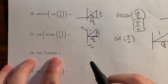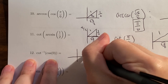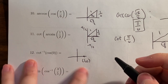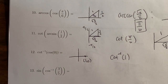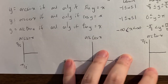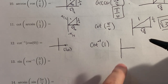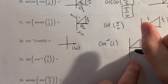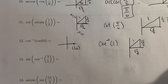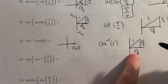For arccot⁻¹(cos(0)): find cosine of 0 first. At angle 0, the point is (1, 0), so cosine of 0 is 1. Now find inverse cotangent of 1. Inverse cotangent lives between negative pi over 2 and pi over 2. Since it's positive, we're in the first quadrant. When tangent and cotangent equal 1, we're dealing with a pi over 4 angle. So inverse cotangent of 1 equals pi over 4.